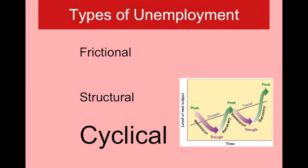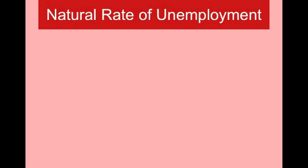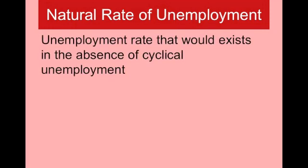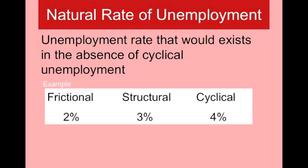Cyclical unemployment is the only type that economists say is avoidable, wasteful, and not wanted in a society. The other two types — frictional and structural — are natural types of unemployment in a dynamic society. So the natural rate of unemployment is that ideal unemployment rate economists want, which is what the unemployment rate would be if you didn't have cyclical unemployment. It's basically the addition of frictional and structural unemployment.